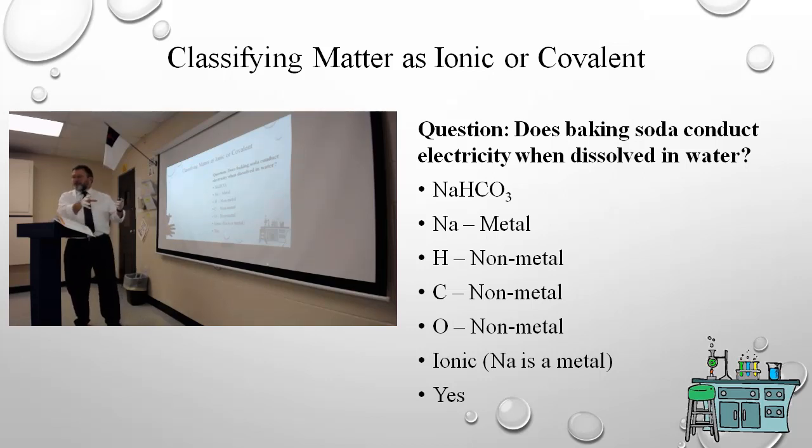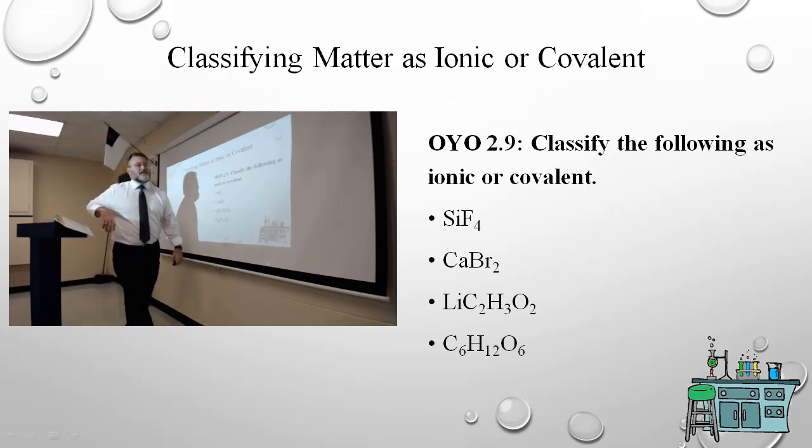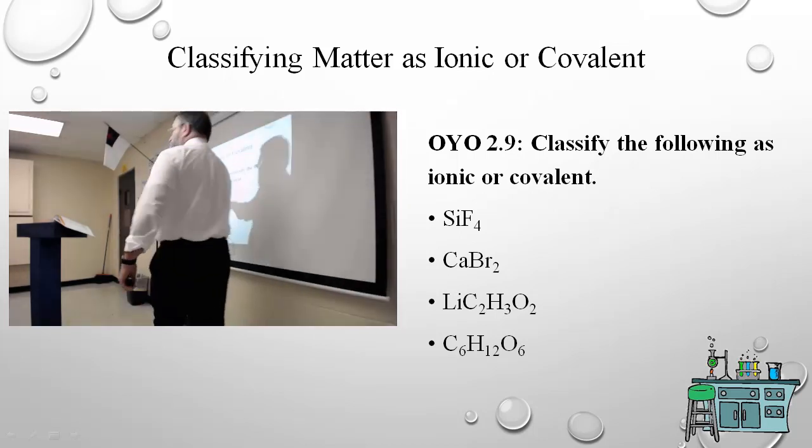It's only going to get better. This is so awesome. Classify each of these, either ionic or covalent. First one, SiF4. Take a moment. Silicon and fluorine. If you look over here, silicon is in column four, right of the jagged line. And fluorine is over here, first row, right of the jagged line. Both right of the jagged line. Therefore, they are both nonmetals. Therefore, this is covalent. Calcium bromide. Calcium, second column, fourth row down. Metal or nonmetal? Metal. We're done. It's ionic.